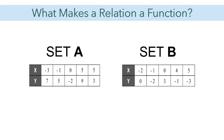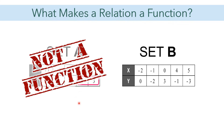Let us see this example. We have two sets of ordered pairs, Set A and Set B, written in a table of values. We check if each x value is associated with only one y value. In Set A: -3 is paired with 7, -1 with 5, 0 with -2, 5 with 9, and 5 again with 3. We have two 5s here. So x value 5 is associated with both 9 and 3. Therefore, Set A is not a function.